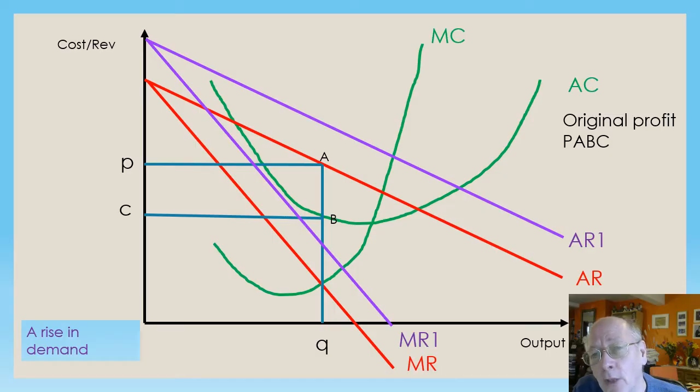Obviously, if the demand curve shifts right, the AR curve shifts right, then the MR curve has got to shift as well. So I've got a new curve that's parallel with the original AR curve and one that's parallel with the original MR curve.